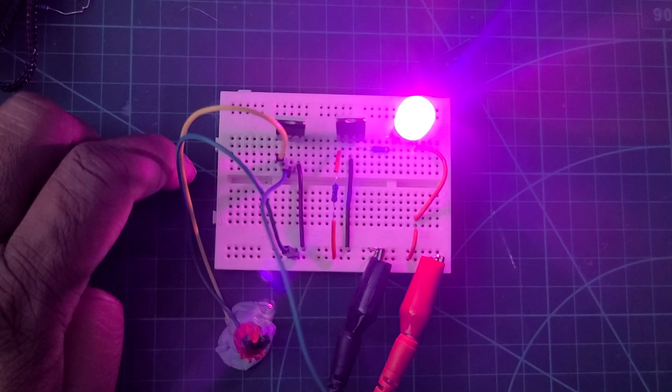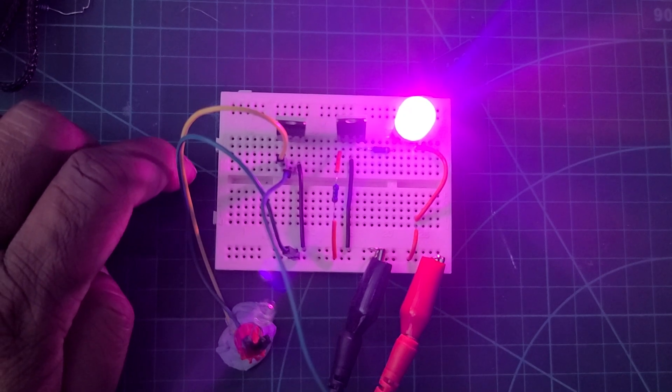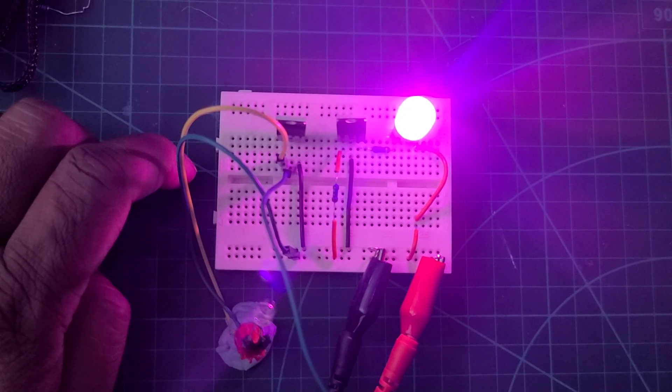when you press the on button the output gets off and vice versa. When you press the off button the output gets on. Now first let's get introduced with the NPN transistor.